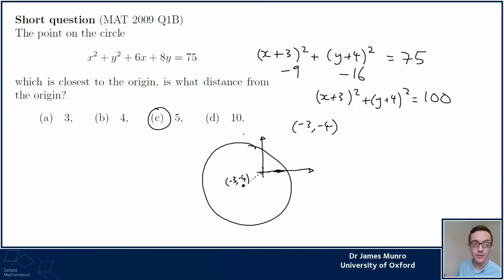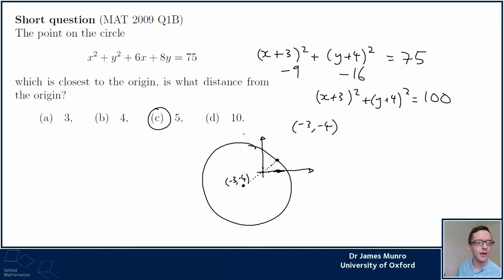The closest point on the circle to the origin is in fact the opposite point - where this circle loops around the origin and comes around on this side. It's where the line between the center and the origin meets the circle again. The origin is halfway along that line: this distance is five and the radius is ten, so we need to go another five along on that side.